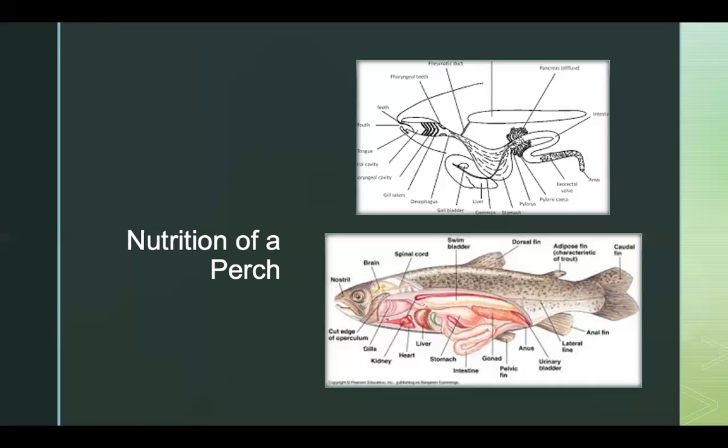The food is mixed with acids to break it down. Just before the intestine, the perch has a small tube called the pyloric caeca, which is finger-shaped and secretes enzymes that are active in the intestine. It also neutralizes the acidity of the partially digested food. Nutrients from the food are then absorbed from the intestines and transferred to the rest of the body.